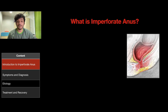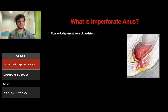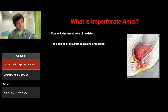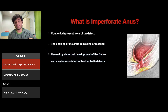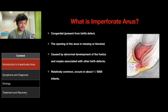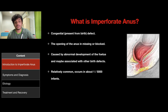So what is the imperforate anus? Imperforate anus is a congenital defect, which means it's present from birth, in which the opening to the anus is missing or blocked. The problem is caused by abnormal development of the fetus and may be associated with other birth defects. It's a relatively common condition that occurs in about 1 out of 5,000 infants.